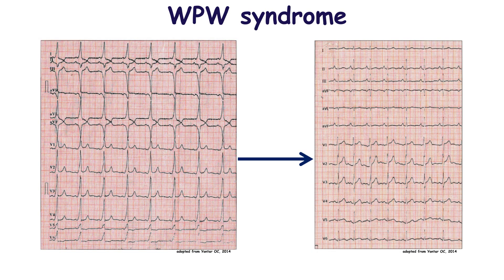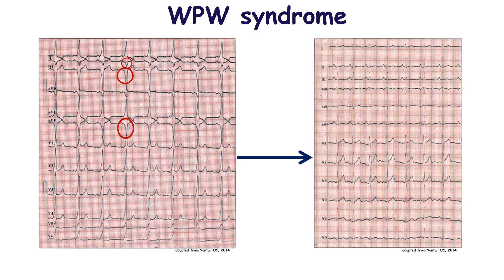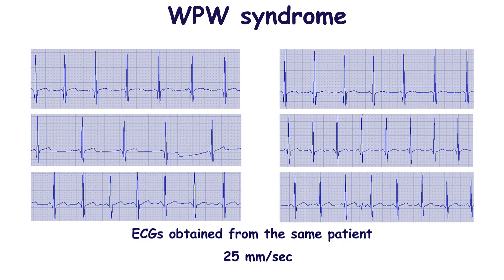When we see multiple ECGs in a patient where pathological Q-waves appear and disappear, we cannot attribute this to myocardial infarction, as in that case Q-waves are permanent. Pre-excitation is one of the most common causes of intermittent pseudo-infarction Q-waves.